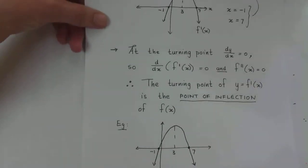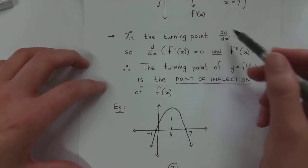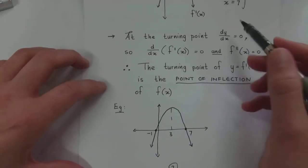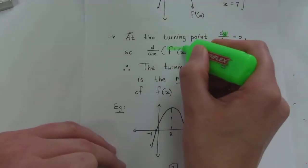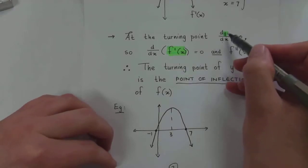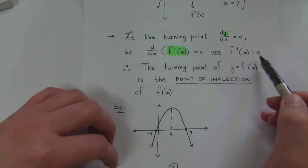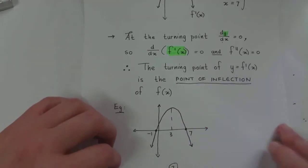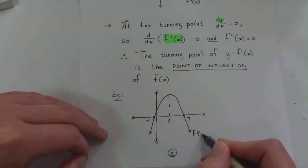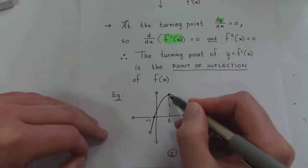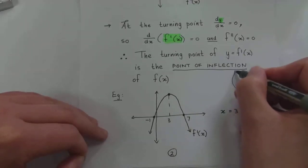If we look at the turning point of the derivative graph — in other words, where dy/dx equals zero — remember when we calculate a turning point we say it's where the first derivative equals zero. But y here is defined as the derivative, not as f(x). So we're saying the derivative of the derivative equals zero, which means the second derivative is zero. Therefore, the turning point of the derivative graph is the point of inflection of the original graph f(x). So at x equals three, I have a point of inflection.